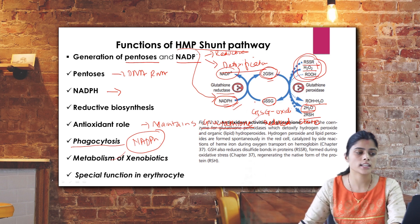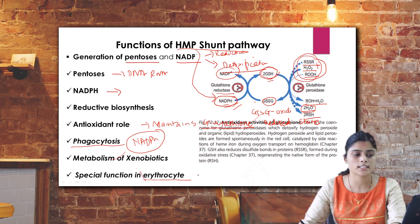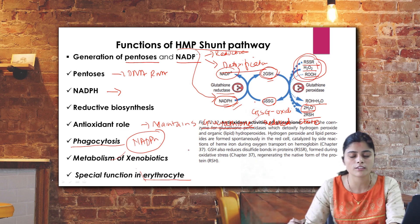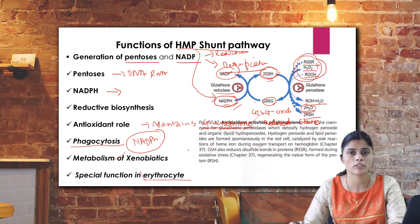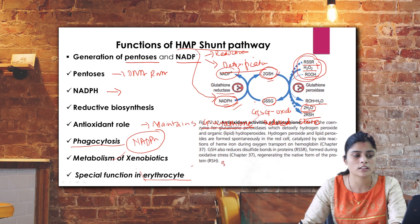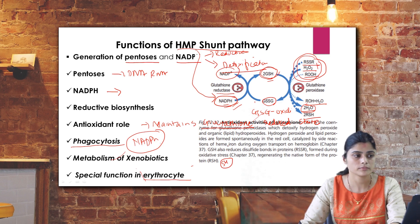Erythrocyte integrity is maintained by NADPH. If NADPH is absent due to deficiency of the HMP shunt pathway's first enzyme, glucose 6-phosphate dehydrogenase (G6PD), RBCs cannot maintain their integrity. This leads to aggregation of sulfhydryl groups, causing degradation of RBCs and resulting in hemolytic anemia.